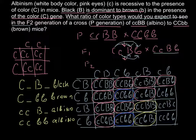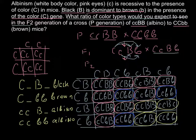Continuing to assign phenotypes: brown for cells with capital C present but small b small b, albino for cells with small c small c. Going through the remaining cells — brown, brown, brown, albino — until all 16 cells are accounted for.